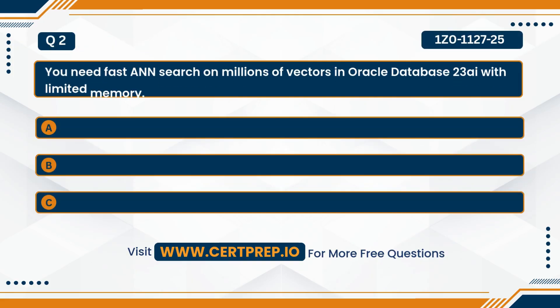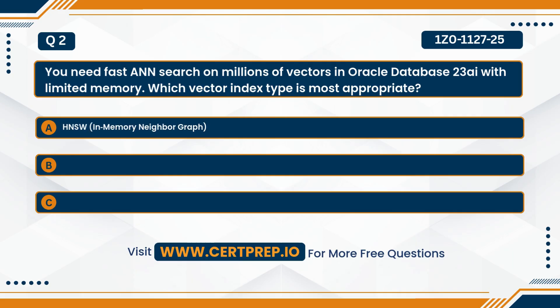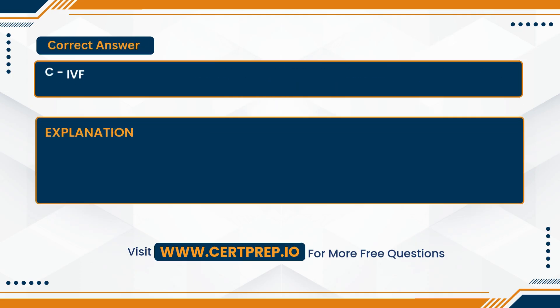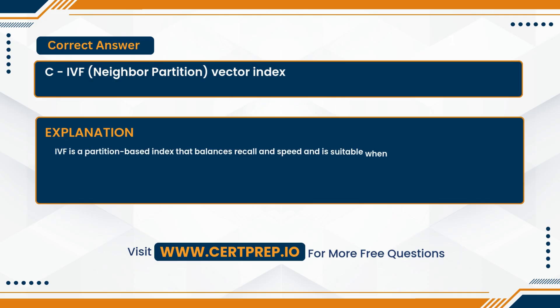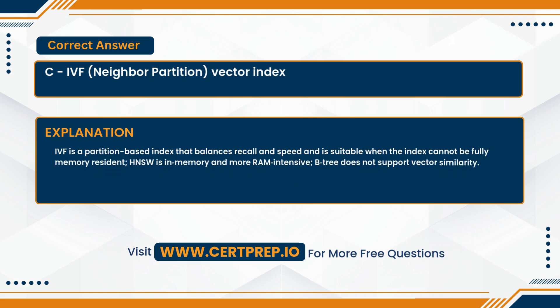Question two. You need fast ANN search on millions of vectors in Oracle Database 23AI with limited memory. Which vector index type is most appropriate? A. HNSW, or in-memory neighbor graph. B. B-tree index on the embedding column. Or C. IVF, or neighbor partition vector index. The correct answer is C — IVF, or neighbor partition vector index. IVF is a partition-based index that balances recall and speed and is suitable when the index cannot be fully memory-resident. HNSW is in-memory and more RAM-intensive. B-tree does not support vector similarity.